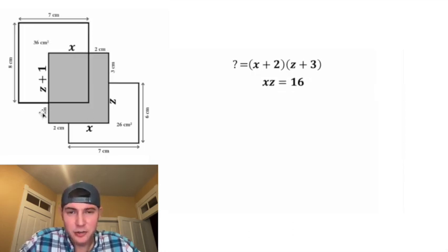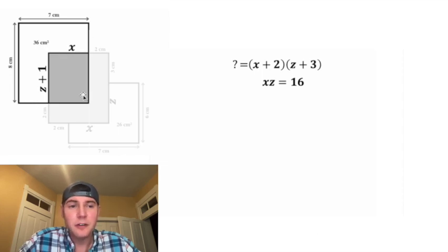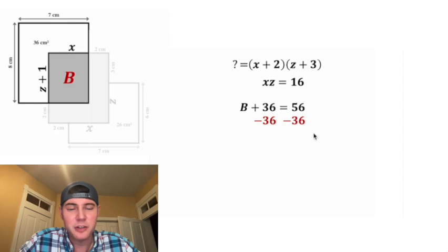Now let's extend this other rectangle and focus on it. If we call the area of this region B, we know that B plus 36 is going to equal 7 times 8. 7 times 8 is 56, and after we subtract 36 from both sides, we get B is equal to 20.